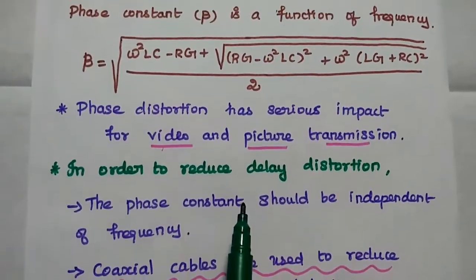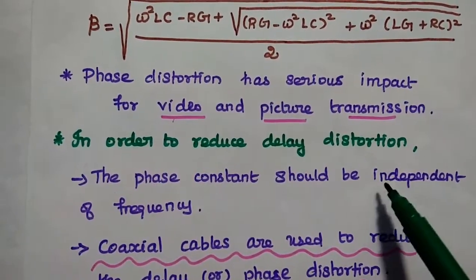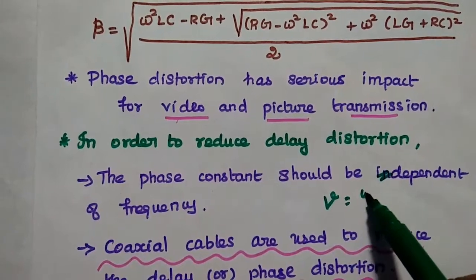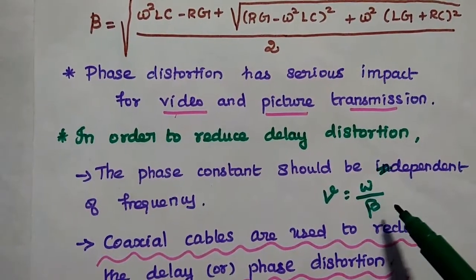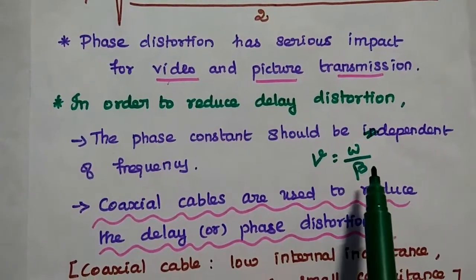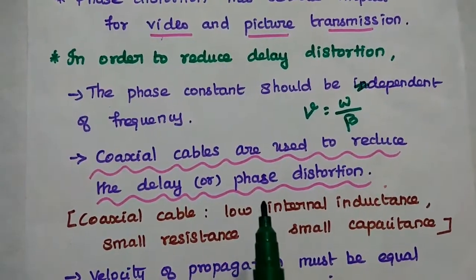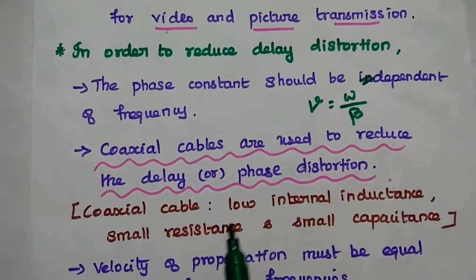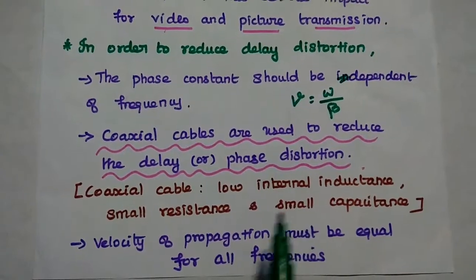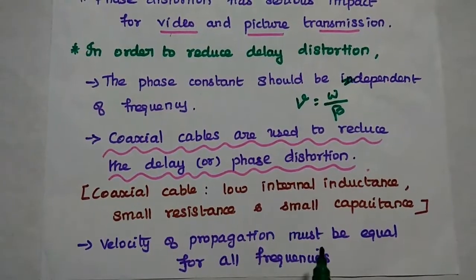In order to reduce delay distortion or phase distortion in a transmission line, the phase constant should be linearly dependent on frequency, so that the velocity of propagation is independent of frequency. We can use coaxial cables to reduce delay or phase distortion, because coaxial cables have certain important properties: low internal inductance, small resistance, and small capacitance. The velocity of propagation must be equal for all frequencies to ensure there is no delay distortion.